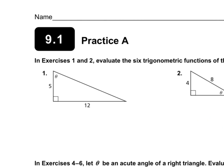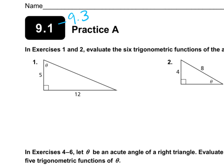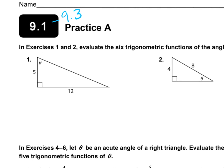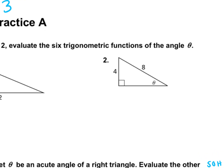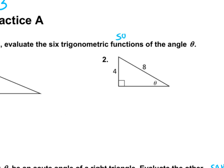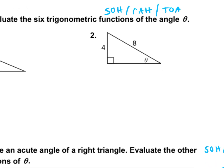Quiz tomorrow is 9.1 through 9.3. Let's start with 9.1 — question number two. We have to know SOHCAHTOA to evaluate our six trig functions, and we also have to know all three sides of our triangle. So we're given two sides — how could we find the third side?